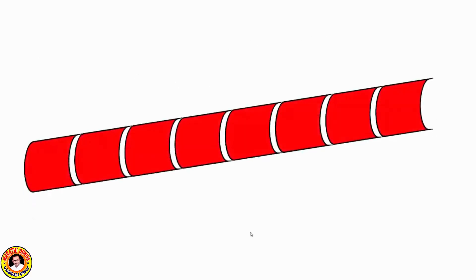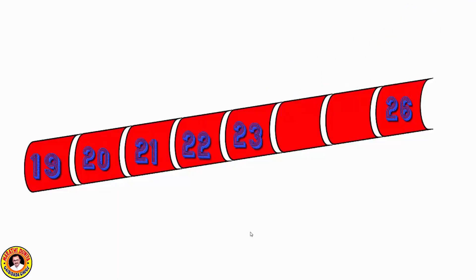Let's try again. This is a number chain starting with 19 and ending with 26. We put numbers after 19: 20, 21, 22, 23, 24, 25. We complete the chain from 19 to 26.